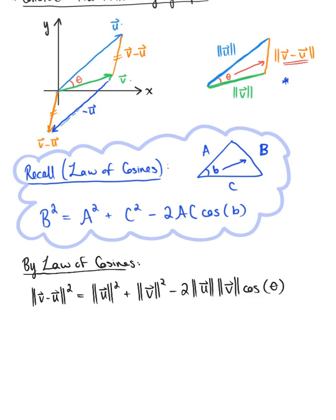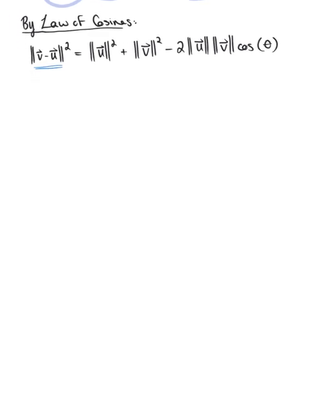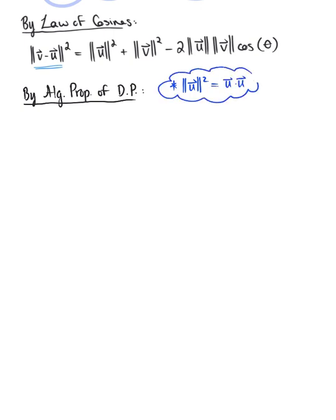The right-hand side cannot be simplified further, but on the left-hand side we can apply one of the algebraic properties of the dot product. Specifically, property two tells us that the magnitude of a vector squared equals the dot product of that vector with itself. Applying this, the magnitude of vector v minus vector u squared equals the dot product of (vector v minus vector u) with itself.